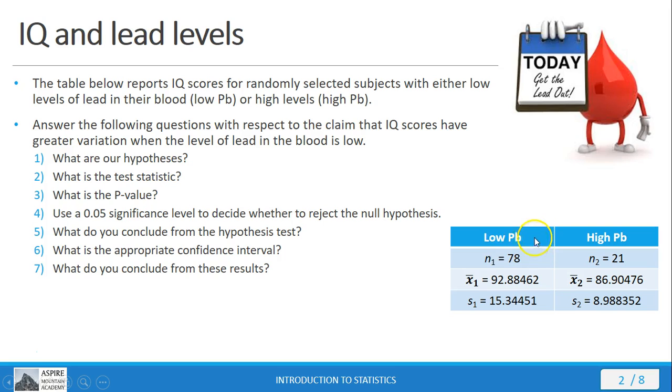So, the low lead level group is going to be the one that has the higher standard deviation, therefore has the higher variance, and therefore we're going to make it sample number one.